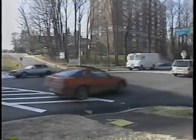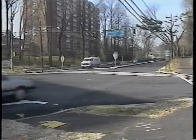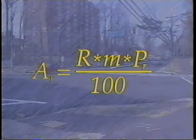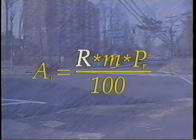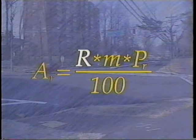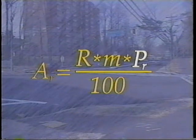Starting with the first location, Bill has to calculate the expected accident reduction for each alternative using this formula. The accident reduction, A sub R, is in terms of accidents per year. It is calculated by using the annual accident rate, R, in accidents per million vehicles per year approaching the spot or intersection, or little m, and the expected percent reduction in accidents for the type of proposed improvement, or P sub R.